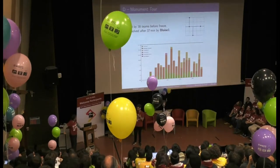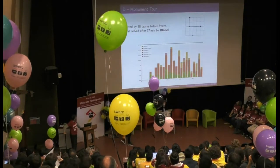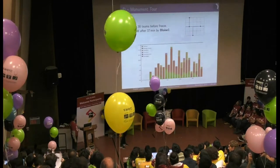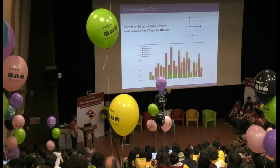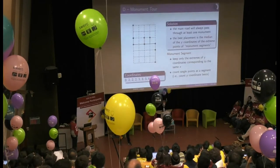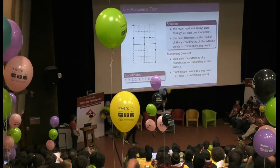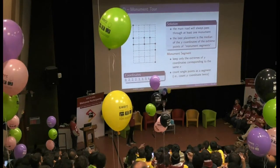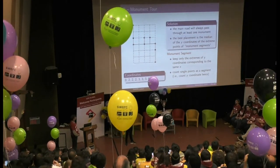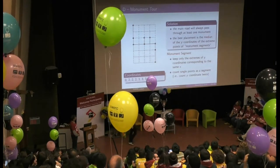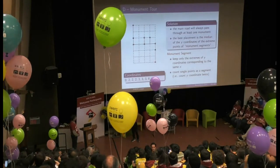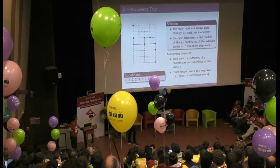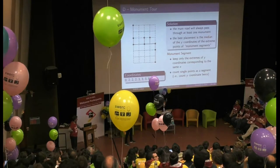The next problem was solved at 37 minutes by team Blaze-1. The idea was to find a tour in which you go along an eastbound road, visit some monuments, return to the road, and so on. A key observation is that the main road will always pass through a monument. A naive solution would go through all the points and verify, but that would not pass the time limit.